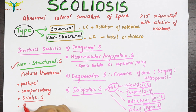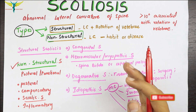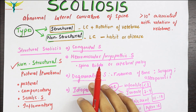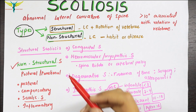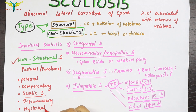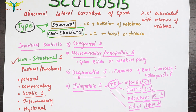Inflammatory scoliosis is a type where the curvature is caused by an infective process like appendicitis, abnormal abdominal muscle spasm, or hysterical causes. Hysterical scoliosis is very rare and has an underlying psychological component.